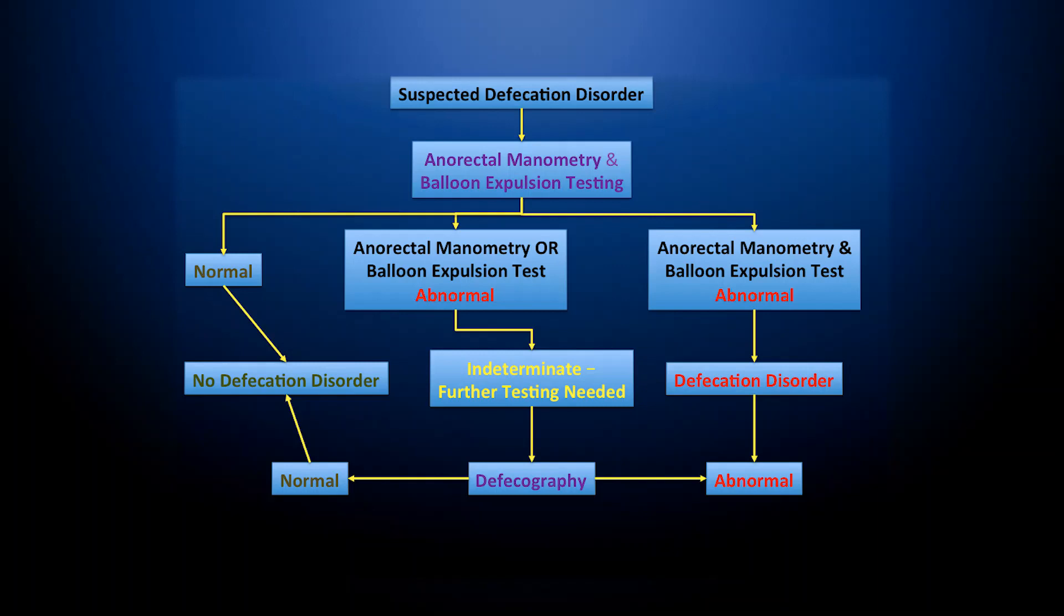If the anorectal manometry or balloon expulsion test is abnormal, then consider performing further testing, if it's indeterminate. Consider defecography, and if the defecography is normal, then there's no defecation disorder. If it's abnormal, then pursue the abnormal result. If the anorectal manometry and the balloon expulsion test are abnormal, then you have a defecation disorder, and this should be pursued.